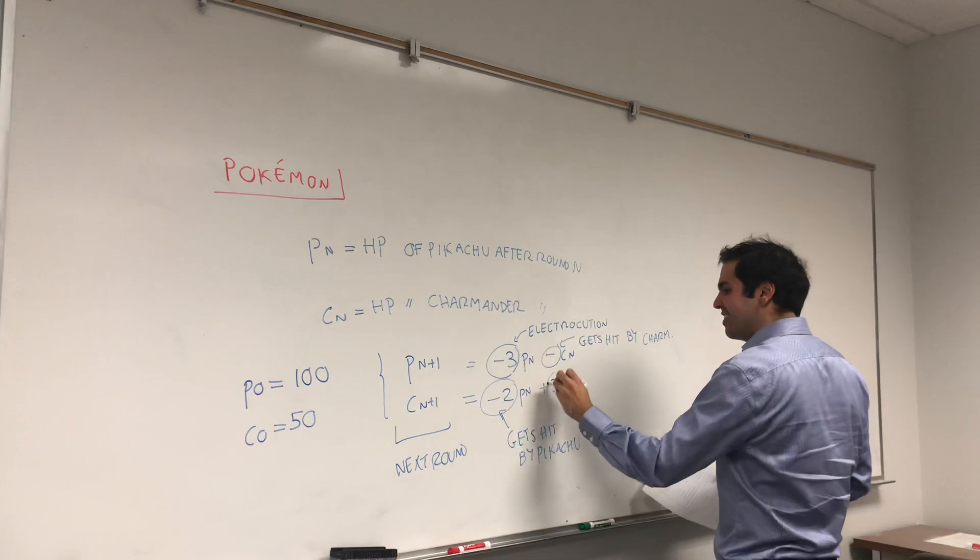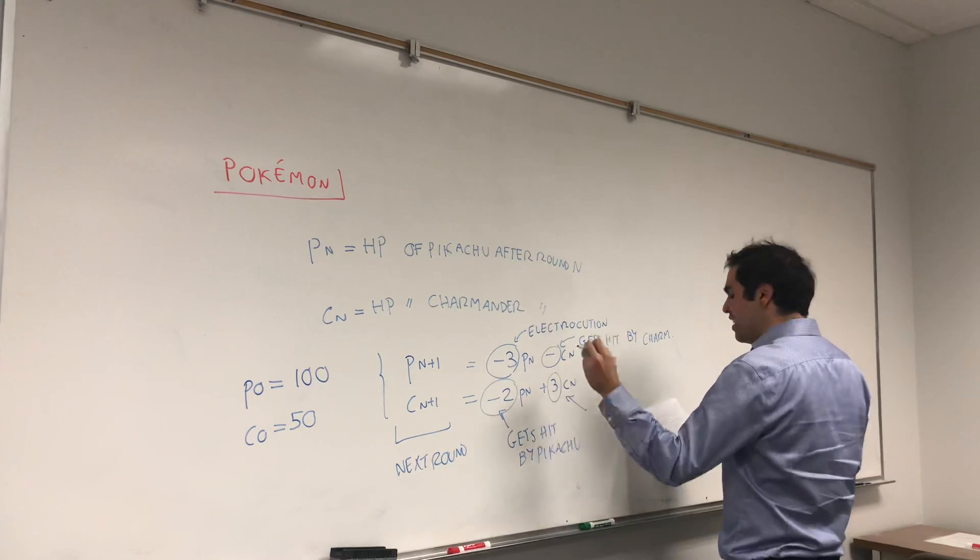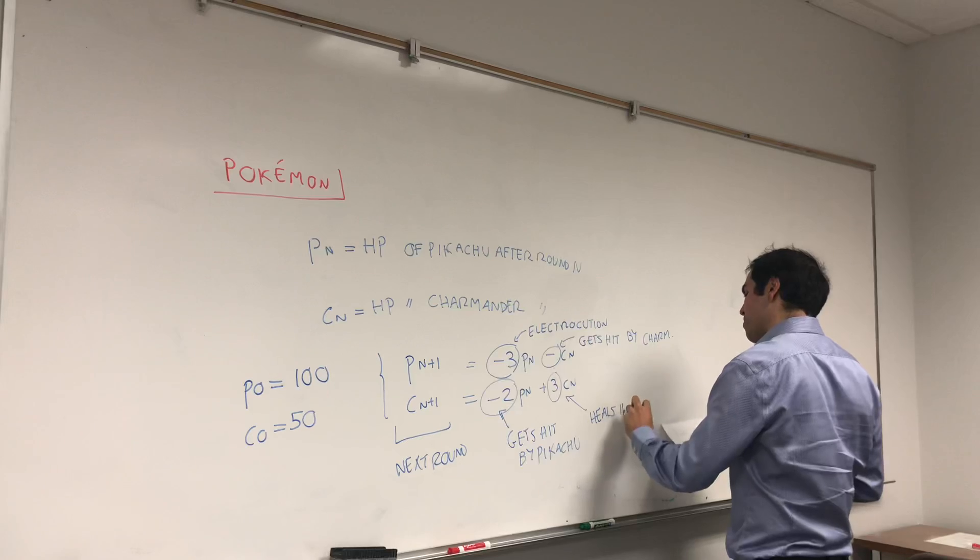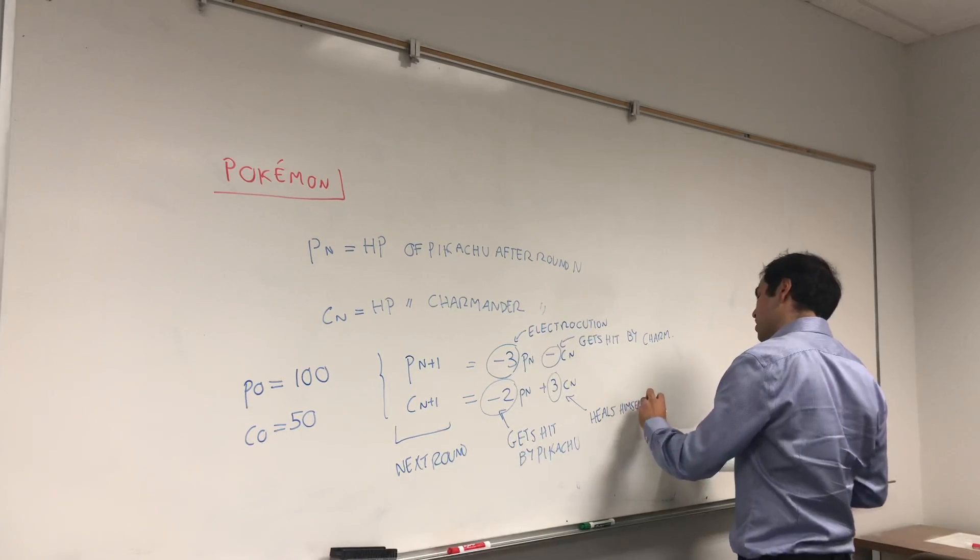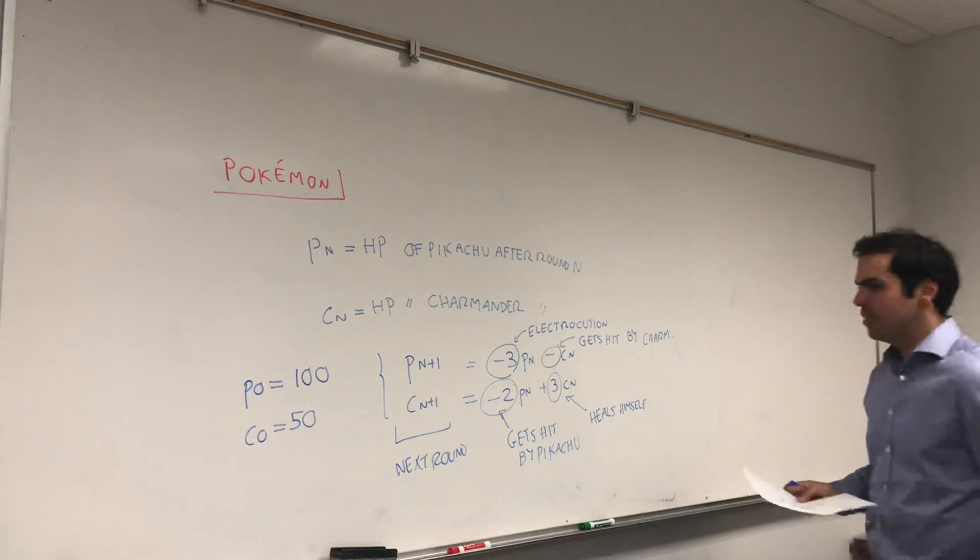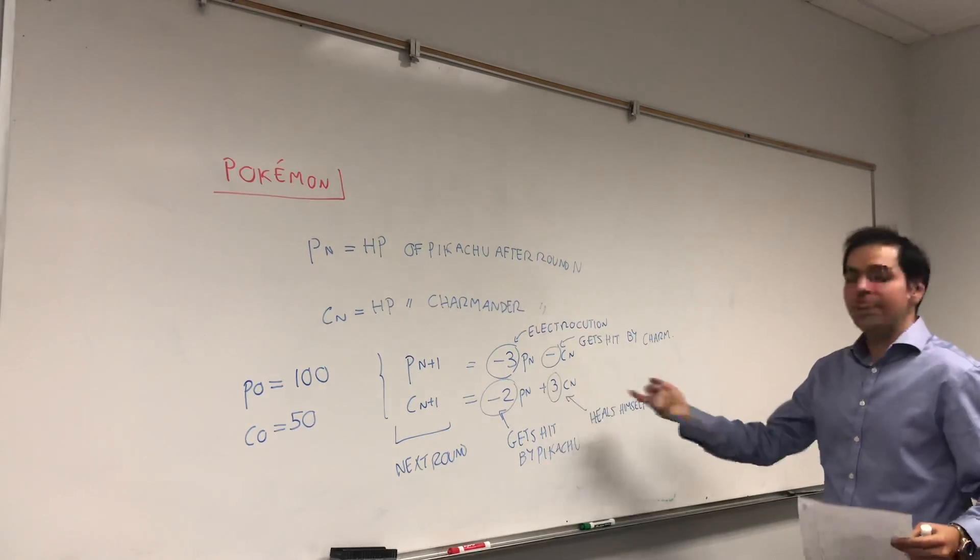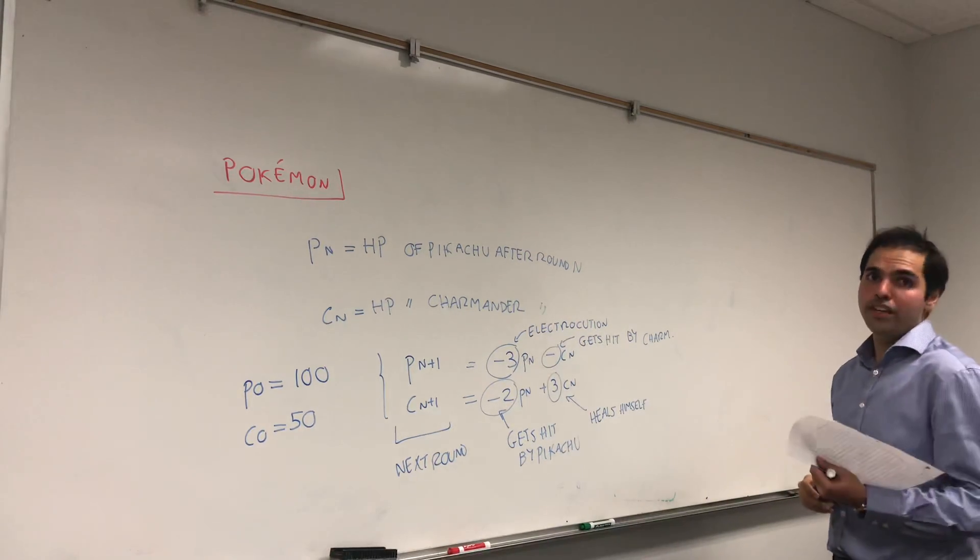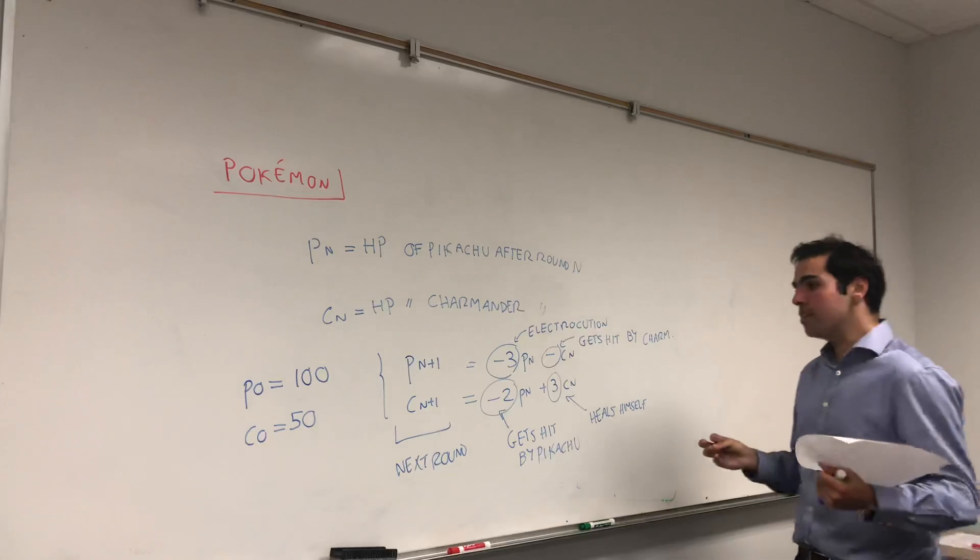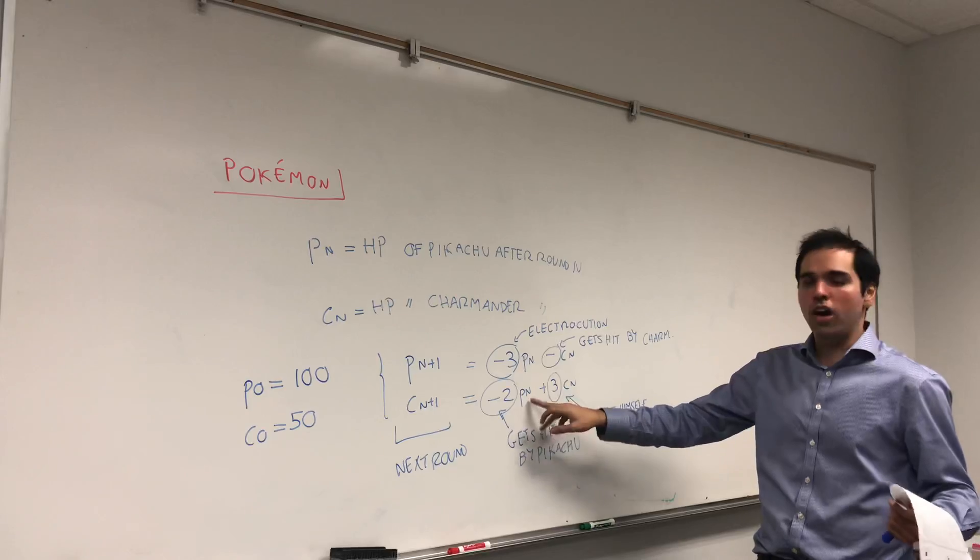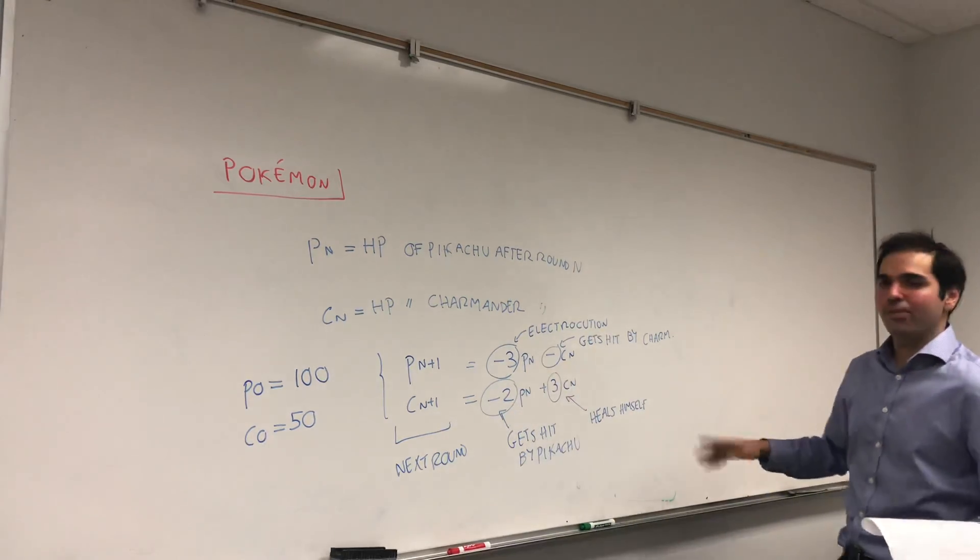We have this and also, lastly, Charmander is very smart. He heals himself. That's why every time Charmander hits, then he gains three times its own hit points. That's good. But the question is, we could still lose because what if Pikachu is so strong that this is bigger than that one?